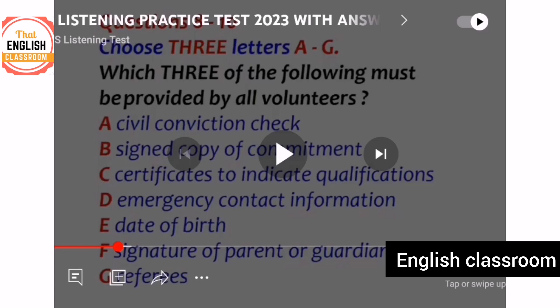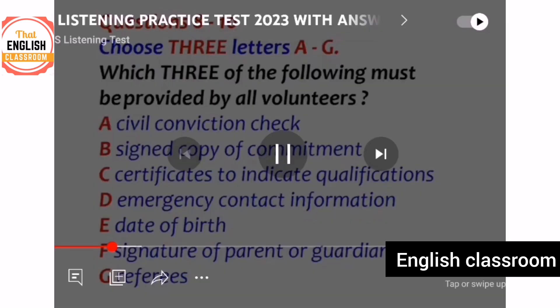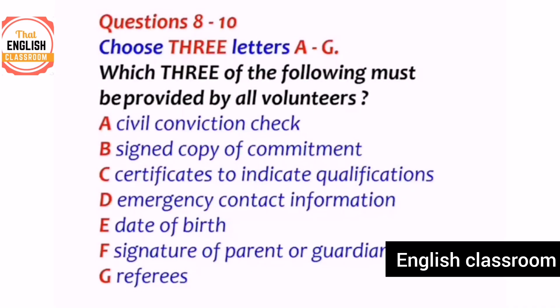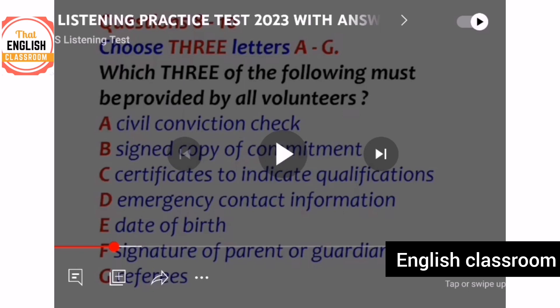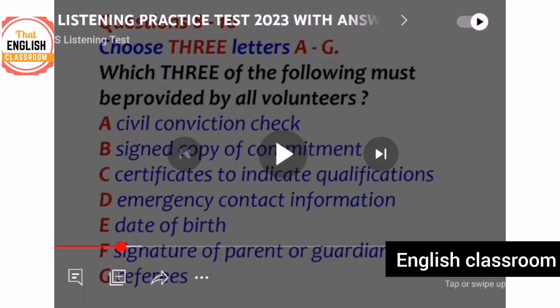The form asks for qualifications — do you need to provide certificates? No, they are not necessary. So that is not a correct answer. But the form does need the names of two referees — not relatives or family members. That corresponds to option G, which is compulsory. So far we have D and G as two of the three answers.